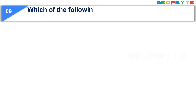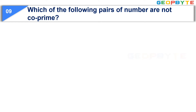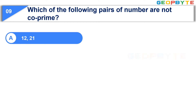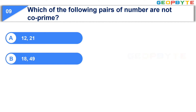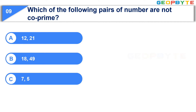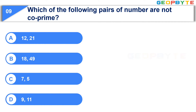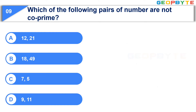Moving to the ninth question: Which of the following pairs of numbers are not co-prime? Option A: 12 and 21, Option B: 18 and 49, Option C: 7 and 5, Option D: 9 and 11. Your time starts now. Your time is up and the correct answer is Option A, 12 and 21.